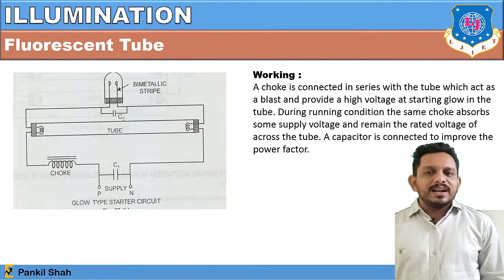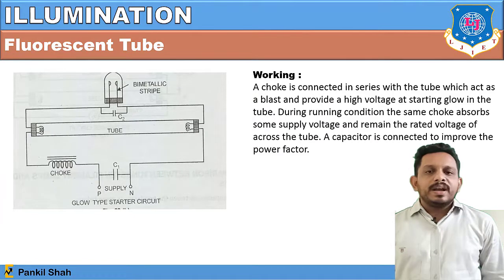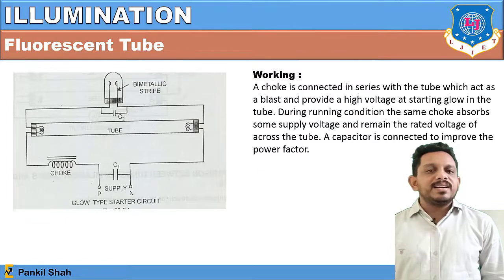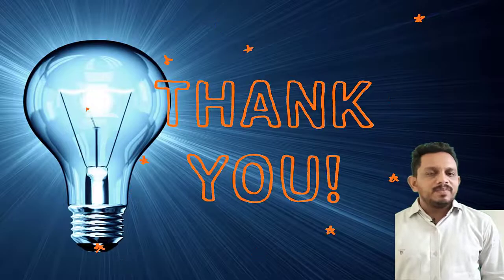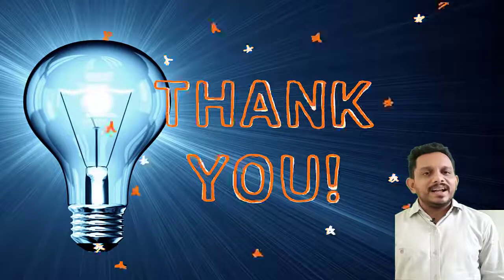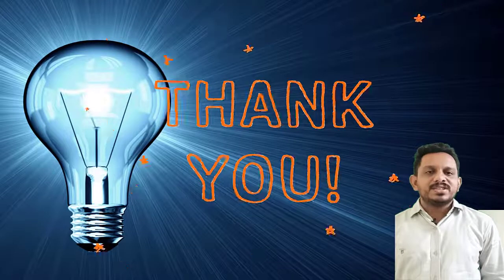During running condition, the choke maintains the rated supply voltage across the tube. The capacitor improves the power factor. The bi-metallic starter allows high current to flow through the tube, which is filled with fluorescent powder. Through the discharging process and chemical reaction, charges flow and produce fluorescent light as the output. In this video we covered illumination, various lighting schemes, and various types of lamps.